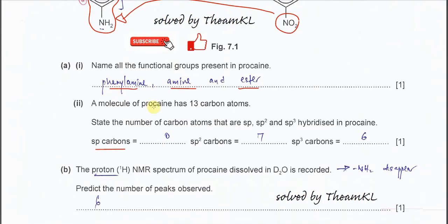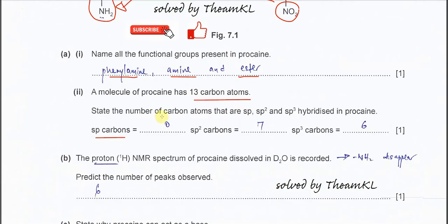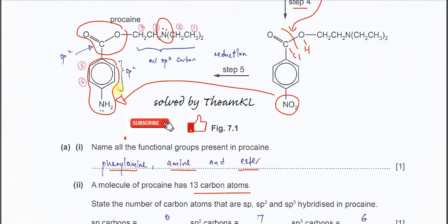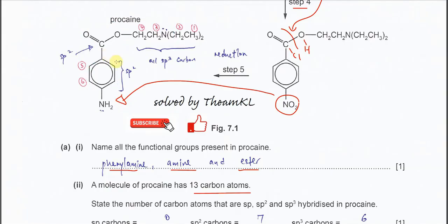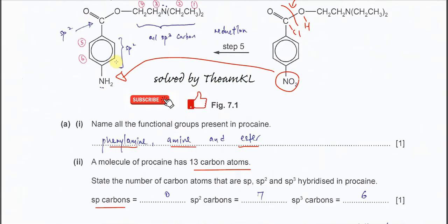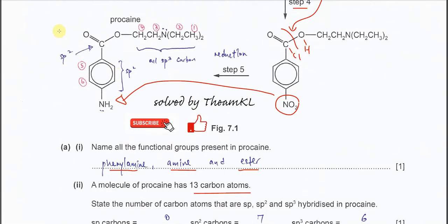Part A2: a molecule of procaine has 13 carbons. State the number of carbon atoms that are sp, sp2, and sp3 hybridized. sp hybridized carbon is carbon with a triple bond. In this compound, there is no carbon with a triple bond, so there are no sp carbons. sp2 carbon is most likely the one with a double bond. In the benzene ring, all those carbons are sp2.